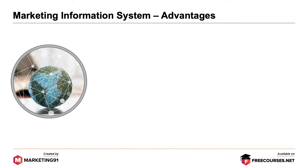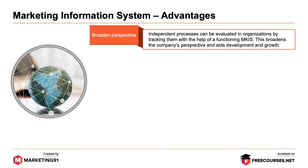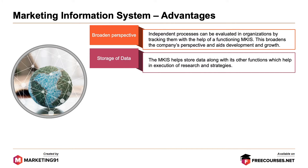Now let's look at the advantages of a marketing information system. First, broaden perspective. Independent processes can be evaluated at organizations by tracking them with the help of a functioning marketing information system. This broadens the company perspective and aids development and growth. Next, storage of data. The marketing information system helps store data along with its other functions, with help in execution of research and strategies.